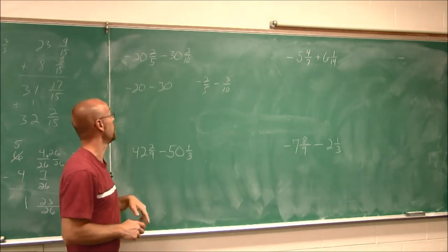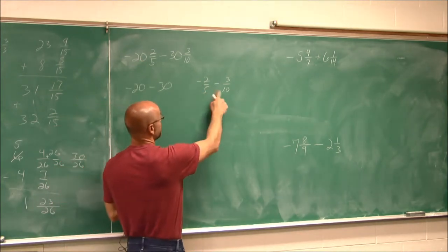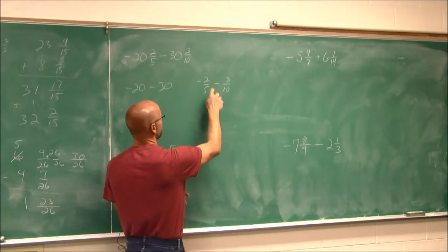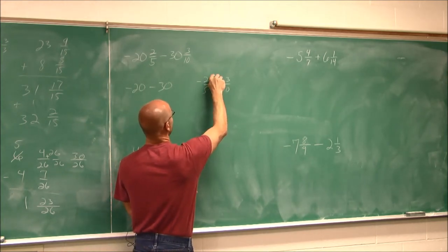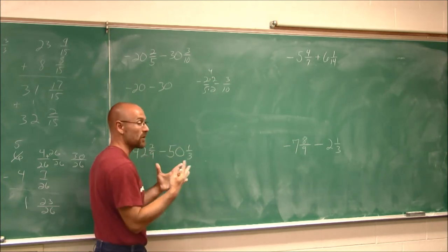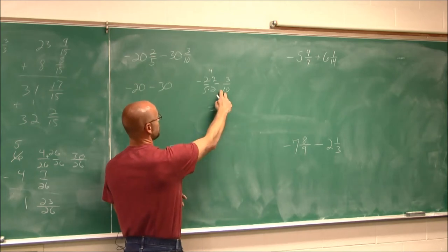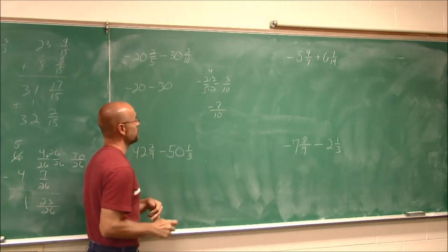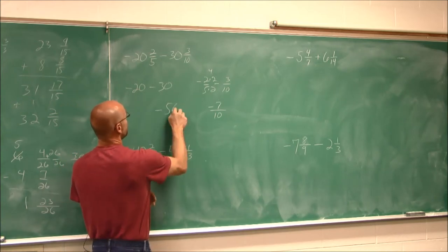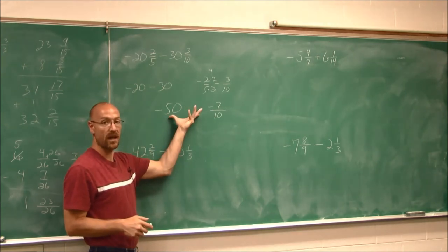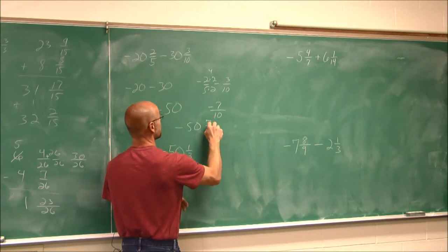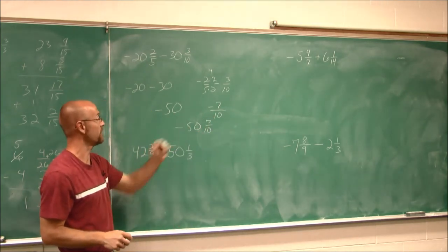Doing the fractions first: I recognize 5 and 10 are multiples, so 10 is the common denominator. Multiplying 2/5 by 2/2 gives me 4/10. Negative 4/10 minus 3/10 — same sign combined — gives me negative 7/10. For the whole numbers, negative 20 and negative 30 combine to negative 50. Because they have the same sign, I combine them to get negative 50 and 7/10, written as negative 50 and 7/10.